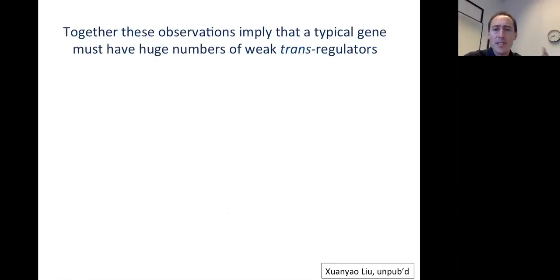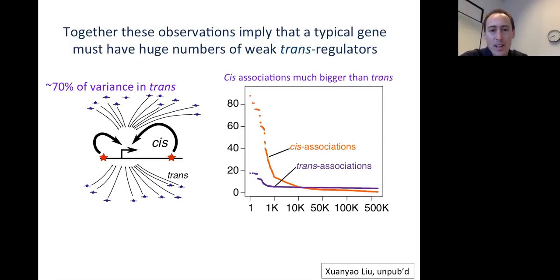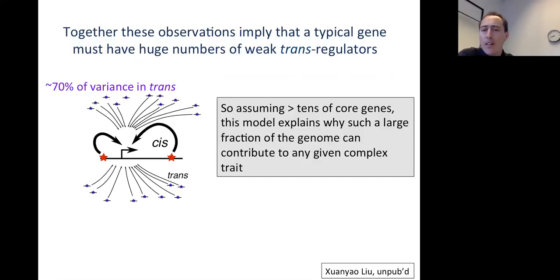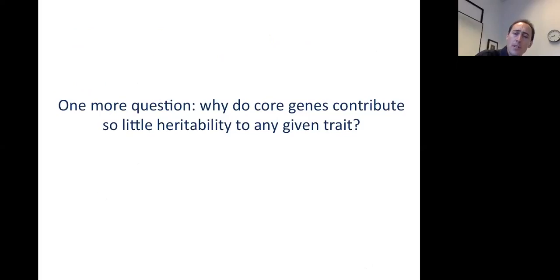Putting these two observations together: a typical gene must have huge numbers of weak trans regulators. I told you that 70% of the variance is determined in trans, but that cis associations are much bigger than trans. So there must be huge numbers of trans regulators of tiny effect for any typical gene. For a typical complex trait like schizophrenia, if there are probably tens or hundreds of core genes, this model starts to explain why such a large fraction of the genome may contribute to any given complex trait — because any given core gene has a huge number of weak trans regulators.